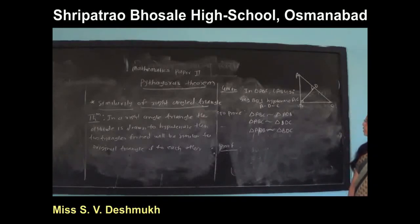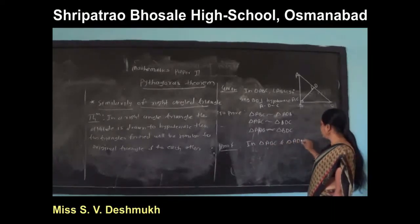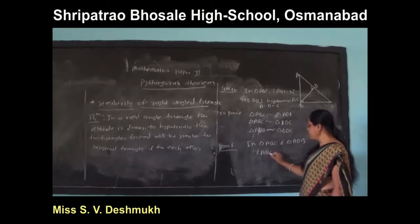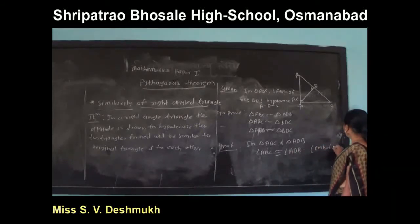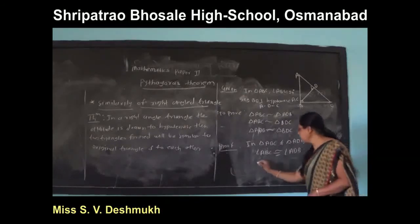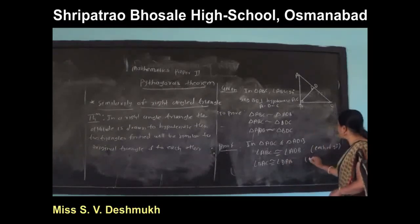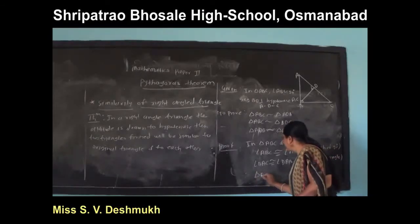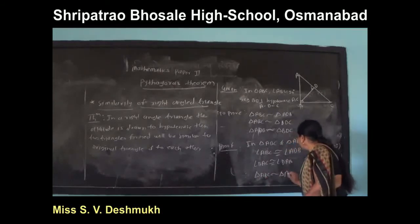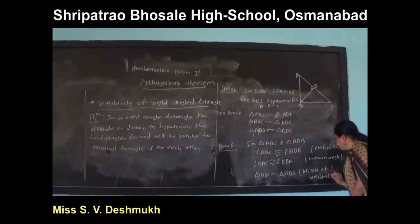B, D, C are collinear. In triangle ABC and triangle ADB, angle ABC is concurrent with angle ADB, each equal to 90 degrees. Angle BAC is concurrent with angle DAB, which is a common angle. Therefore triangle ADB is similar to triangle ABC by AA test of similarity. This is equation one.